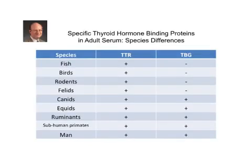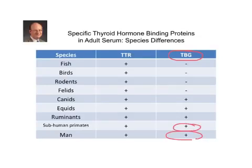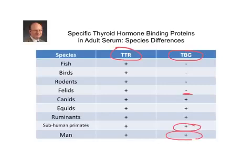For those interested in comparative physiology and medicine, as veterinarians should be, there are significant species differences in the types and amount of circulating thyroid hormone binding proteins, as you can see from this table. There are significant amounts of thyroxin binding globulin, TBG, in humans and subhuman primates, but also in ruminants, equids, canids, and dogs. However, interestingly, the cat has very little, if any, TBG. And yet all other species, all the way down to fish, have transthyretin. Keep note of this, as we'll show how important the combination of circulating binding proteins are for the determination of the free hormone fraction and how they impact total hormone concentrations as well.